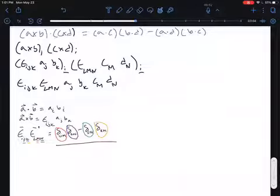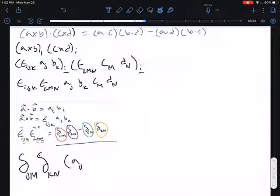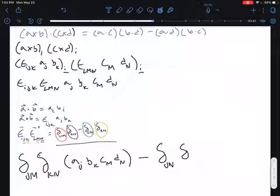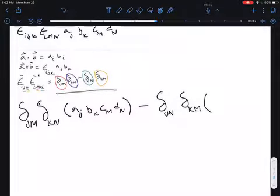So now we have the identity, we can rewrite this as Kronecker delta J, M, Kronecker delta K, N, times A sub J, B sub K, C sub M, and D sub N, minus Kronecker delta J, N, Kronecker delta K, M, times the exact same variables.